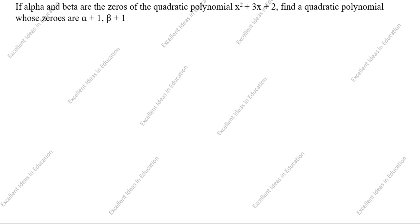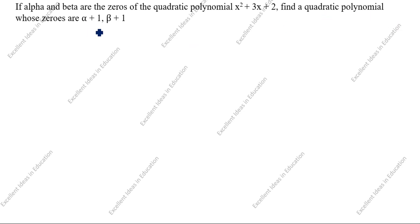Hi students, welcome to my channel Excellent Ideas in Education. Today we are going to solve this polynomial problem. This is a board exam problem. If alpha and beta are the zeros of the quadratic polynomial x squared plus 3x plus 2, find a quadratic polynomial whose zeros are alpha plus 1 and beta plus 1.